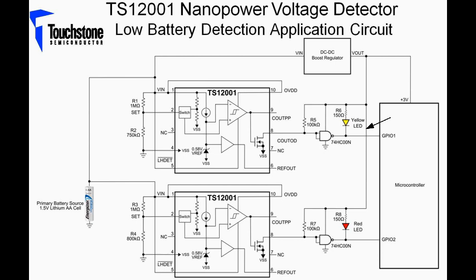The yellow LED represents a low battery event while the red LED represents a critical low battery level. For the lab demonstration, the 1.5-volt AA battery powering the TS-12001 devices will be replaced by a standard power supply.